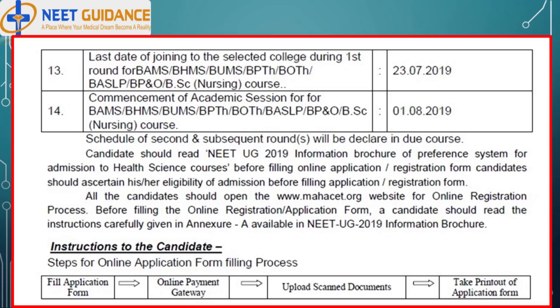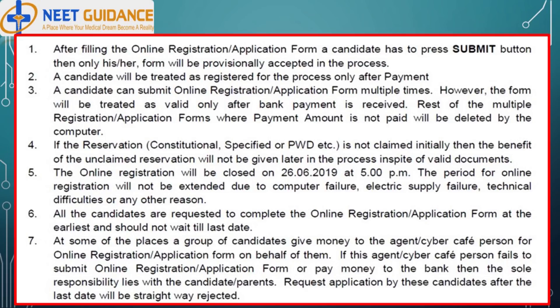Steps for online application form filling process: fill application form, online payment gateway, upload scanned documents, take printout of application form. After filling the online registration form, the candidate must press the submit button, then only the form will be provisionally accepted. The candidate will be treated as registered only after payment. A candidate can submit the online registration form multiple times; however, the form will be treated as valid only after bank payment is received. Multiple registration forms where payment is not paid will be deleted by the system.